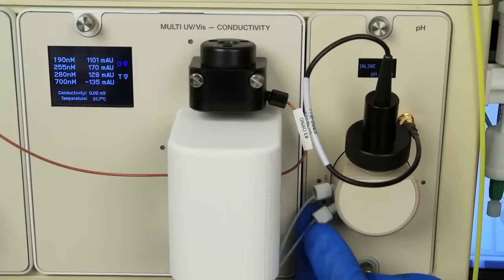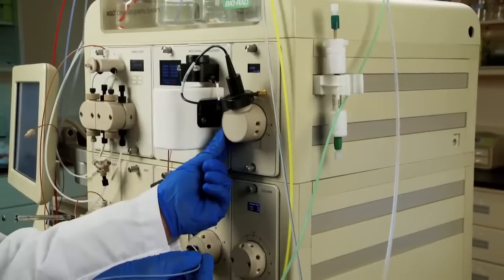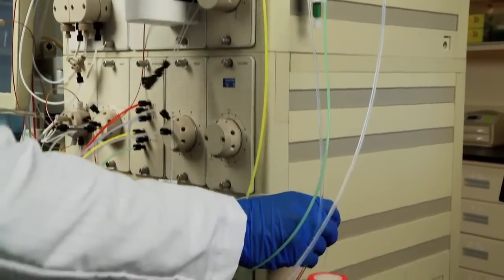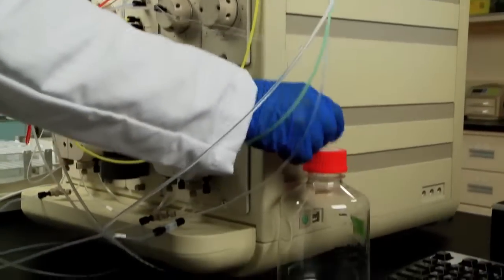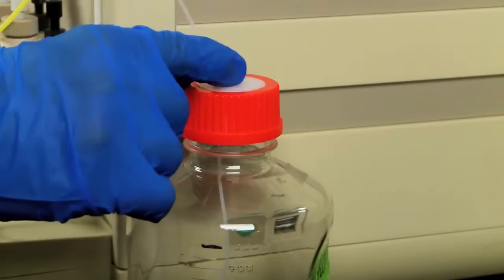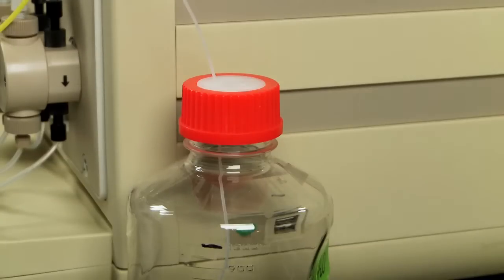Connect the waste tubing to the calibration waste port, labeled CAL OUT, on the pH valve, and immerse the open end into a waste container. The waste container should be placed next to or below the NGC. Do not place the waste container on top of the NGC.